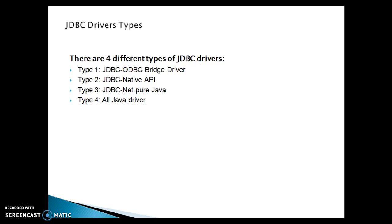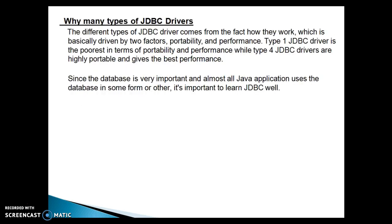There are four different types of JDBC drivers. The first is called the Type 1 driver, also known as the JDBC-ODBC Bridge driver. The second is the Type 2 driver, also called the JDBC Native API driver. The third is the Type 3 driver, also called the JDBC Net Pure Java driver. And finally, the fourth is the Type 4 driver, also called the All Java driver or Thin driver.